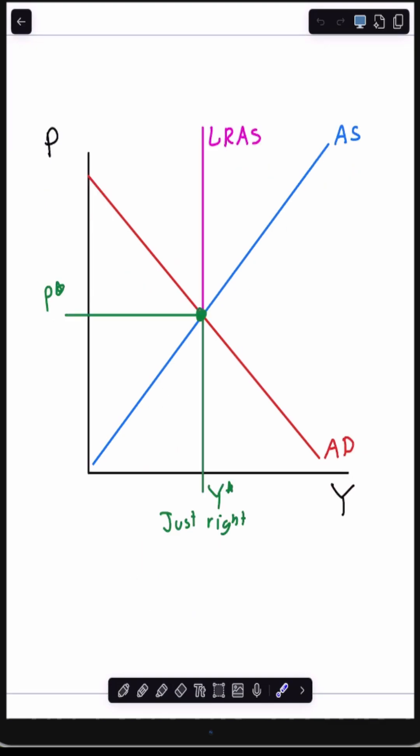So it's only at the point where all three of these curves meet that we're at our natural rate of output and our economy is running just right.